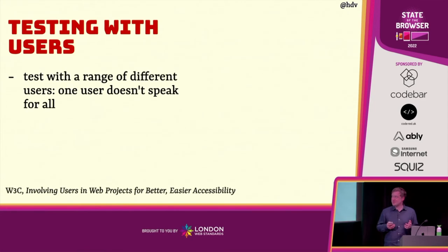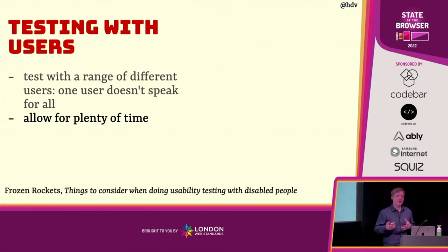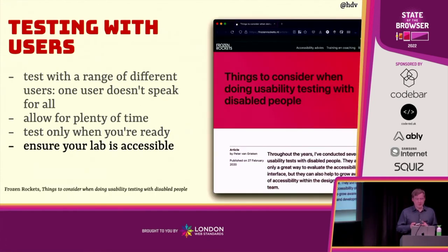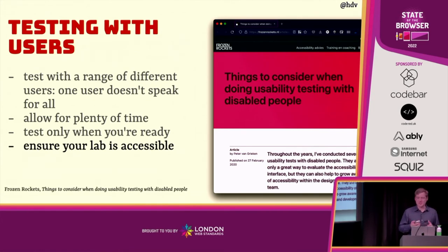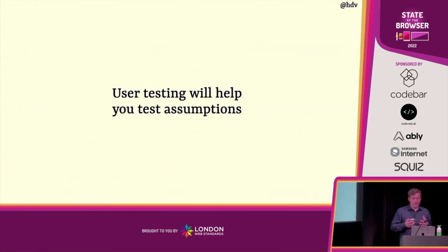When testing with users, you want to test with a wide range of different users to avoid taking one user's opinion as the rule. If you test with users with disabilities, you usually want a little bit more time, because you might need to set up specific assistive technologies, or they might want to use their own machine. You only want to test when you're ready — when you have maybe achieved full WCAG compliance. And you want to ensure that your lab is accessible. A great blog post about this is from Frozen Rockets, which goes into these advantages and more, like how to actually test with users with disabilities.